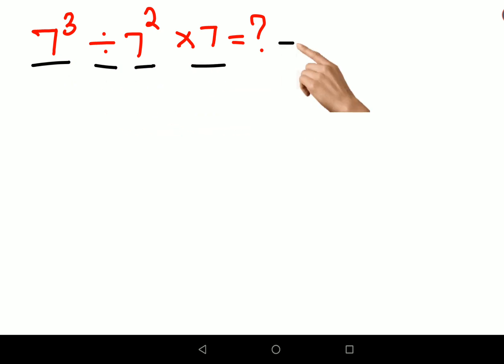Now people thought that this relates to 7 cube divided by 7 square times 7. When you have the same base a raised to m times a raised to n, you always add the indices, right?